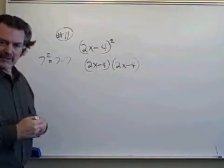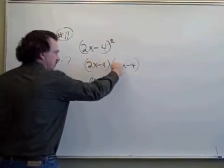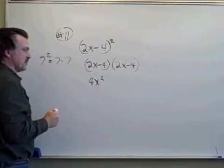2x times 2x, that would be the F of FOIL. That's 4x squared. The F of FOIL is 2x times 2x. That's 4x squared.